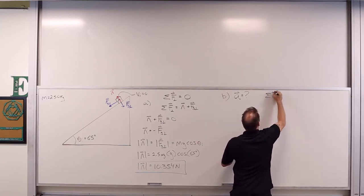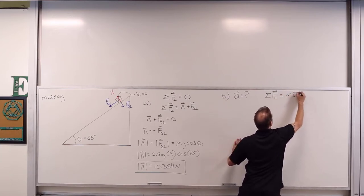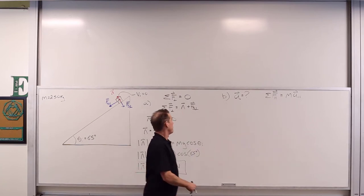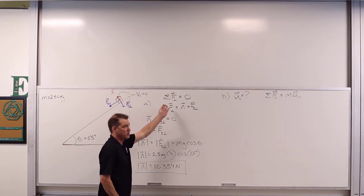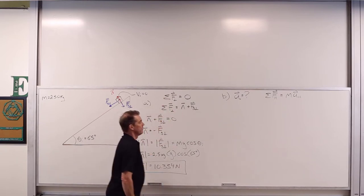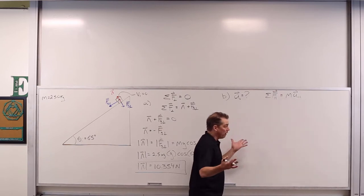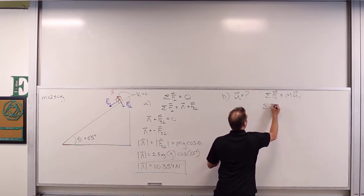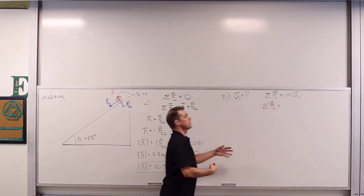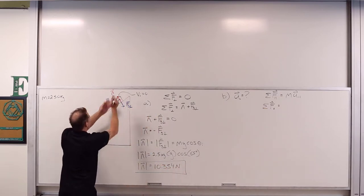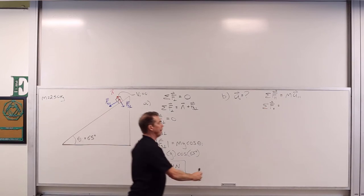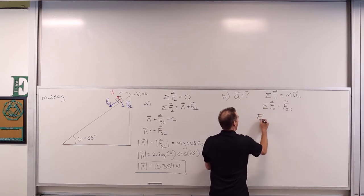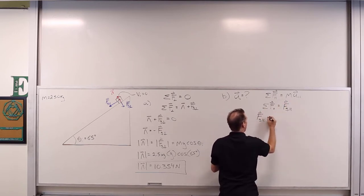The net force parallel to the incline produces the acceleration of the mass parallel to the incline. That is the overall acceleration because the perpendicular component must be zero. The net force parallel is just the parallel component of the gravitational force, Fg parallel, so Fg parallel = M × a parallel.